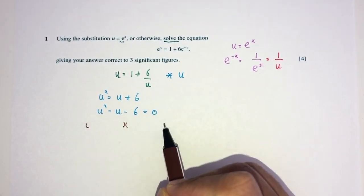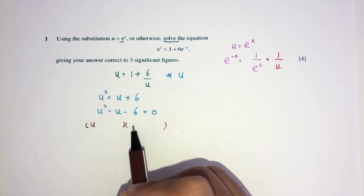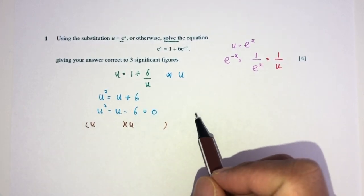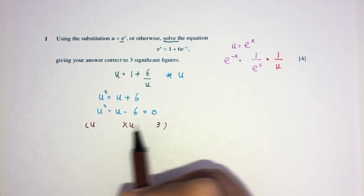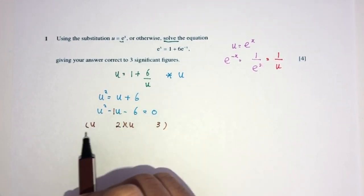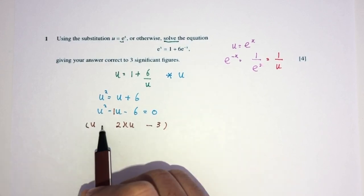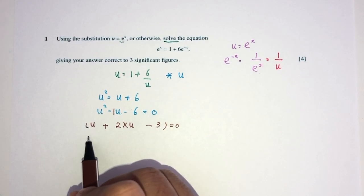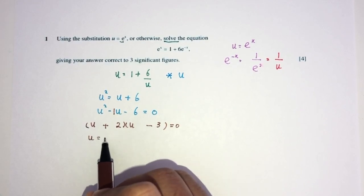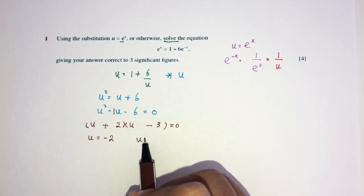Now, factorize. u squared is u times u. 6 is 6 times 1, or it is 2 times 3. So, here I will use 2 times 3. Why? Because here we have minus 1. To get minus 1, I have to have minus 3 and plus 2. That will be 0. So, u will be minus 2, and u will be the value of 3.